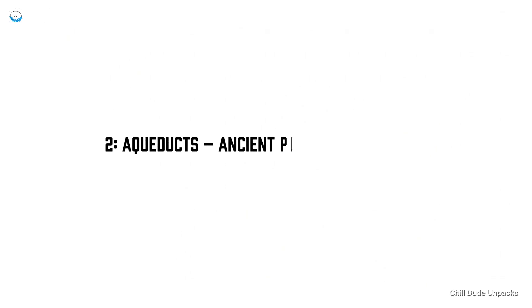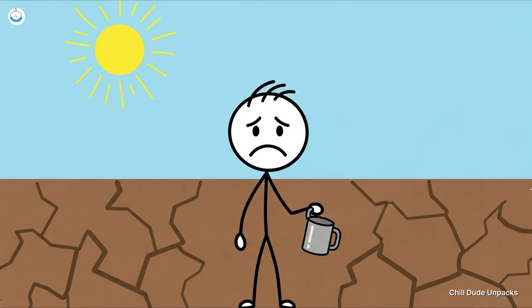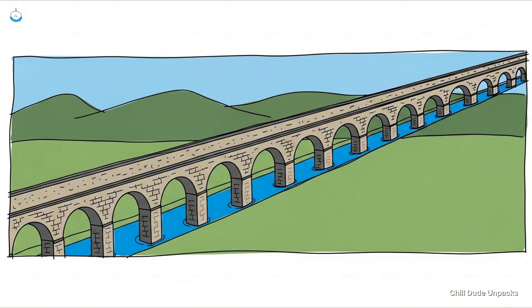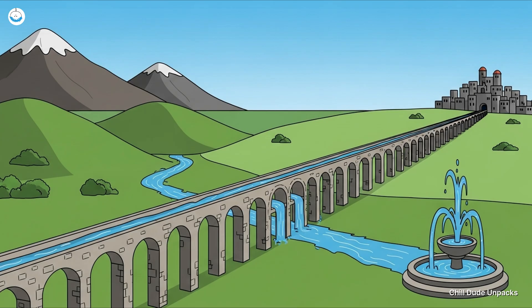Number two, aqueducts—ancient plumbing that puts some modern cities to shame. Imagine having no running water. Now imagine you're in ancient Rome and suddenly there's this giant graceful stone bridge just pouring fresh water into your city. No pumps, no electricity, just gravity, baby. Aqueducts were the Uber Eats of water delivery. They carried it from miles away over hills, across valleys, straight into fountains, public baths, and private homes.